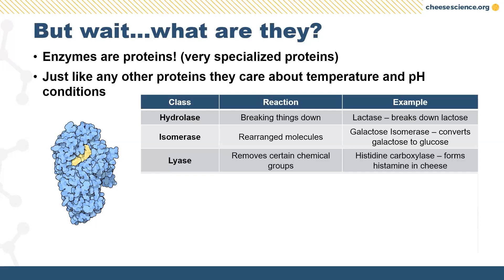Lyases are specific forms of enzymes that break down and clip off certain parts of molecules. An example is histamine formation in cheese, which is the bane of many Swiss cheesemakers. The amino acid histidine, naturally occurring in milk, can be broken down by certain microbes to form histamine, which can cause an allergic reaction — just like antihistamine allergy medications address. This can happen in dairy products and become a health issue if it gets out of hand.